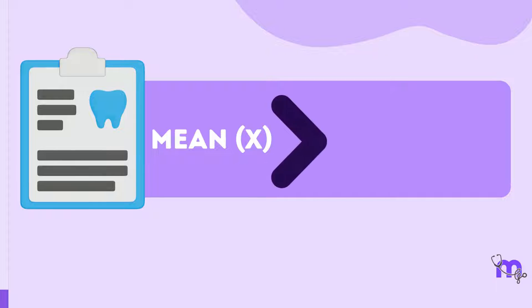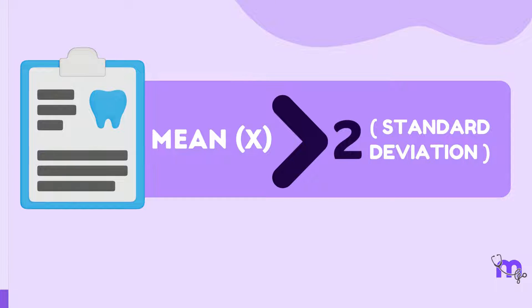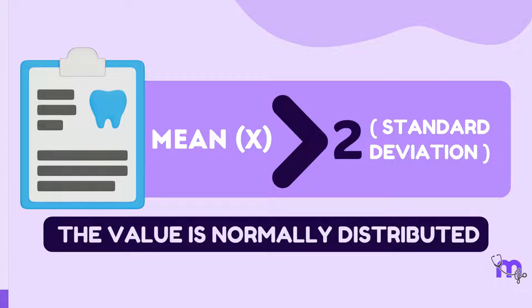In cases where the mean is greater than twice the standard deviation, it indicates that the value is normally distributed.